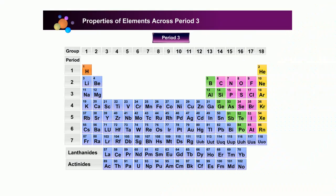Period 3. There are eight elements across period 3. They are: